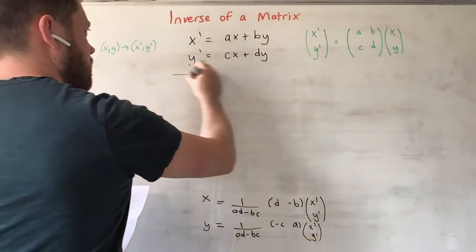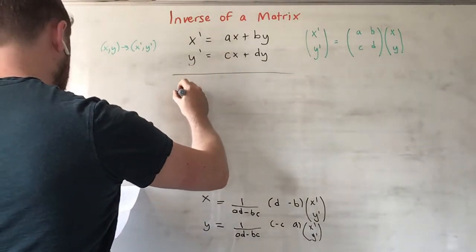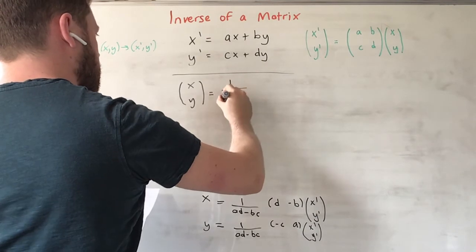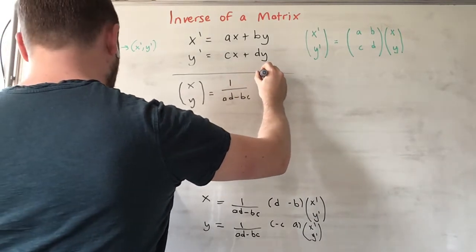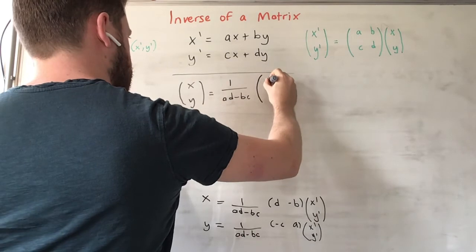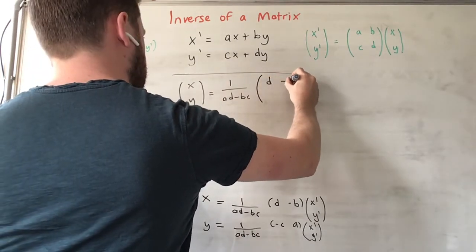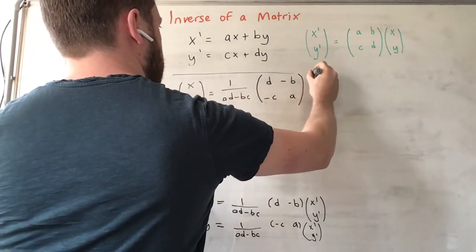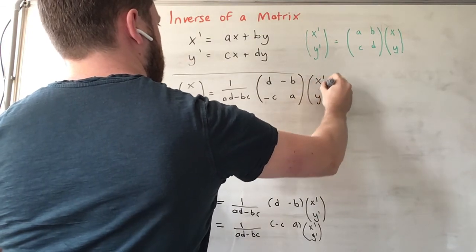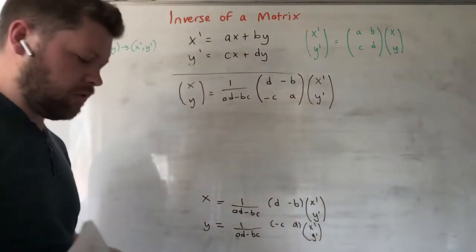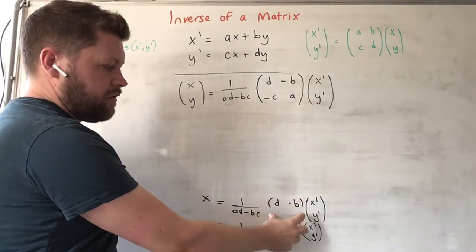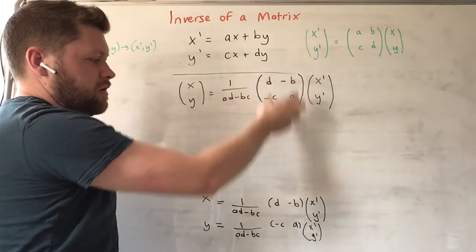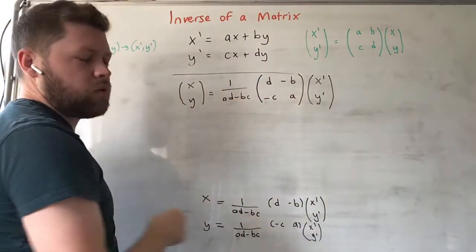We can write this as (x, y) = 1 over (ad - bc) times the matrix (d, -b; -c, a) times (x', y'). So we've combined the rows of this matrix here into a combined 2 by 2 transformation matrix acting on x', y'.